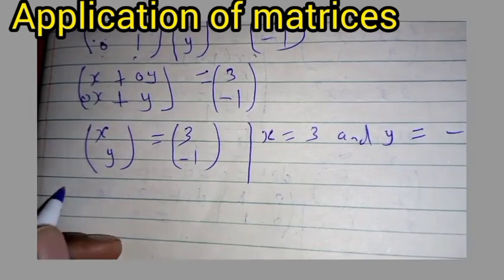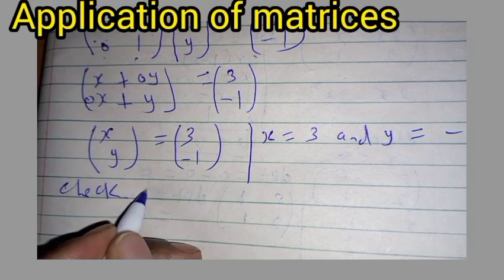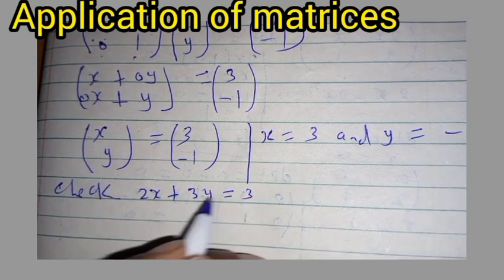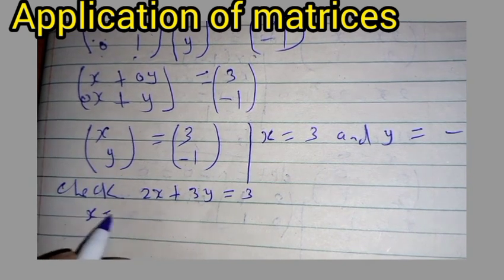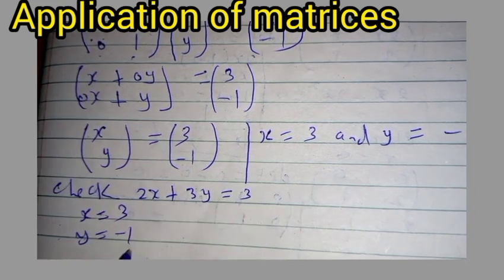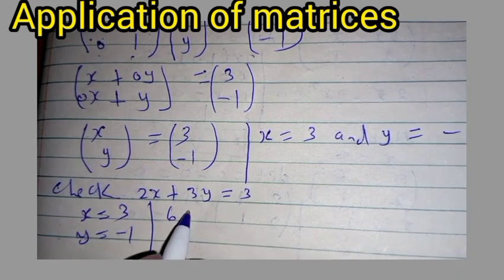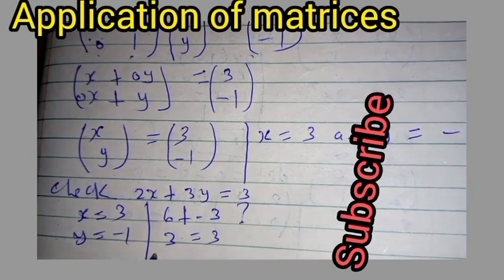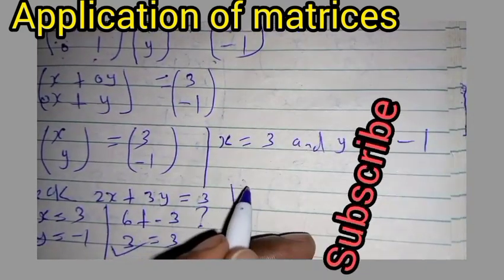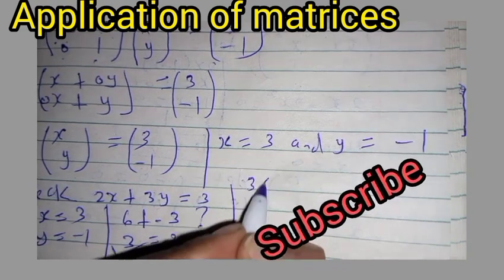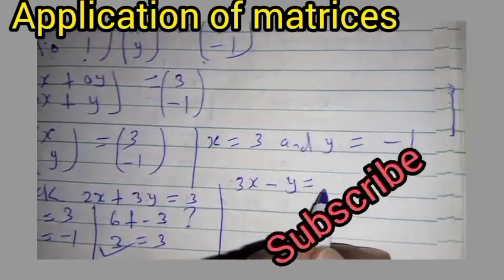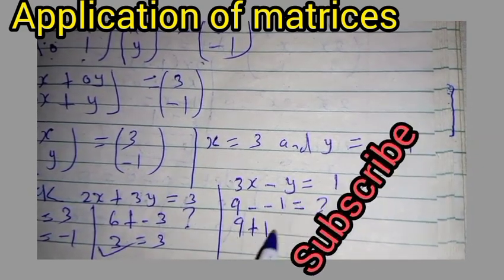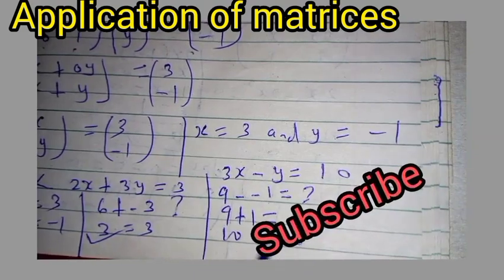We can check our result. For equation one: 2x plus 3y equals 3. Substituting x equals 3 and y equals negative 1: 6 plus negative 3 equals 3. Three equals three, so that part is correct. For equation two: 3x minus y equals 10. Substituting: 9 minus negative 1 equals 9 plus 1, which equals 10. Ten equals ten, so our working is correct.